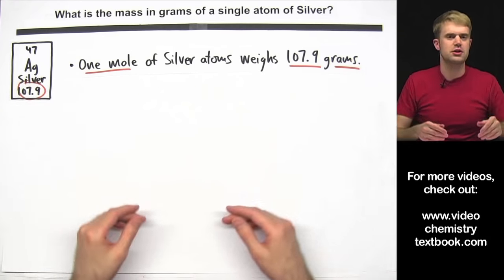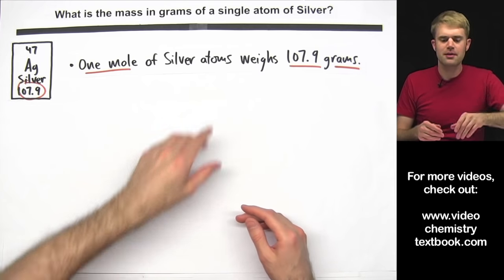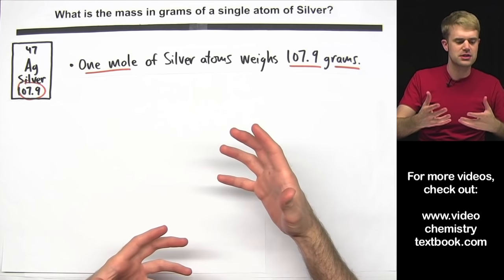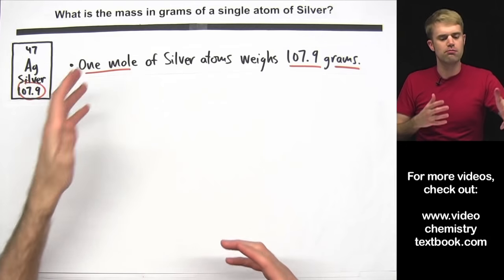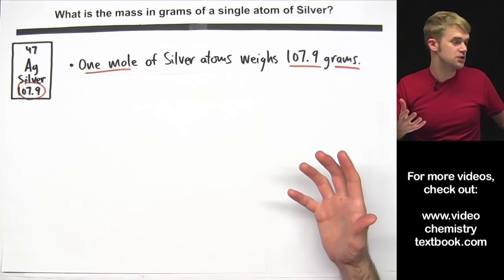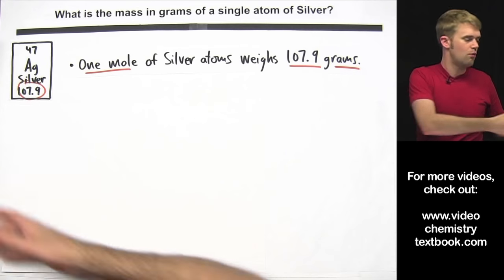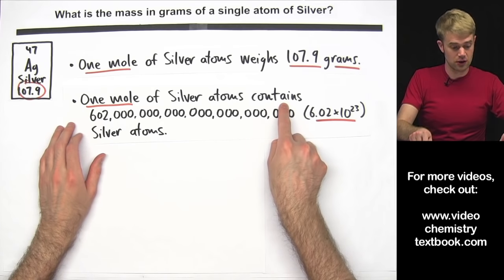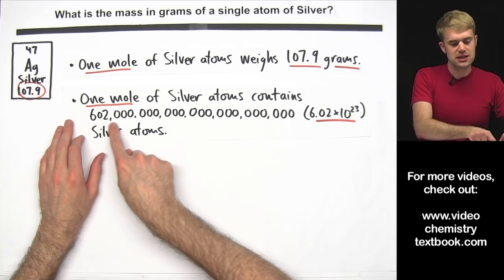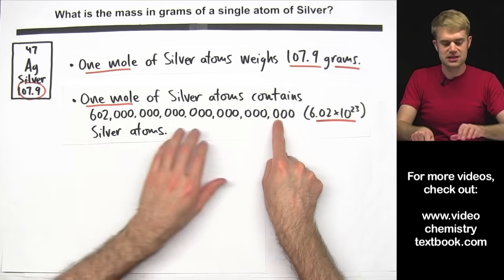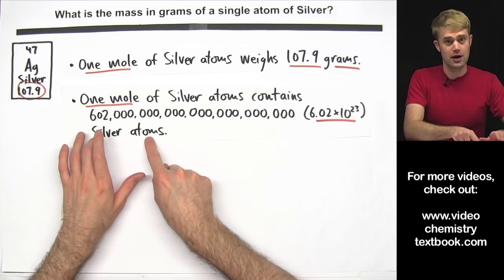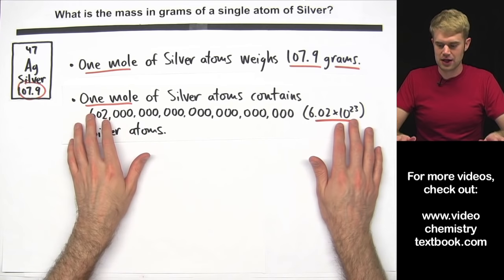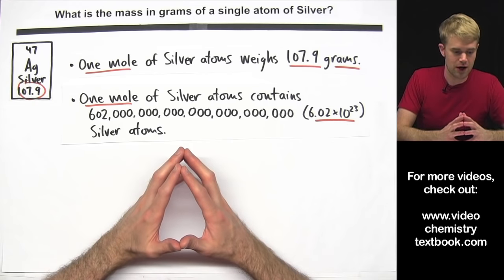We're not talking about a mole of silver here though — we're talking about a single atom of silver. So what do we know about the relationship between moles and the number of things in a mole? We know that one mole of silver atoms contains 602 hexillion silver atoms, often abbreviated as 6.02 times 10 to the 23rd silver atoms.